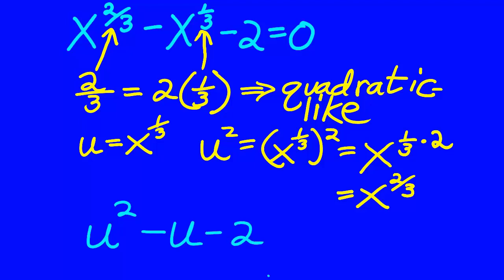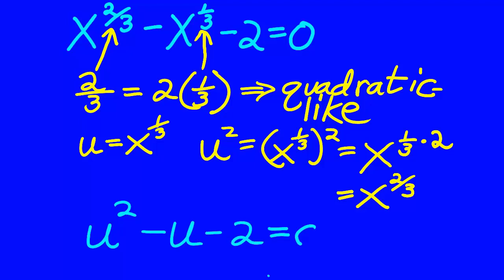u² - u - 2 = 0 will be much easier to solve. And it's factorable. You don't have to factor. You can use the quadratic formula, but I would rather factor when I can.